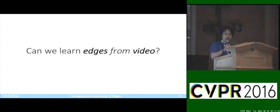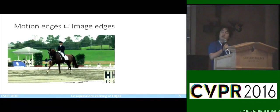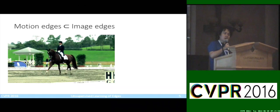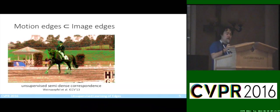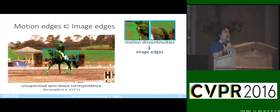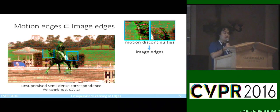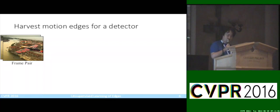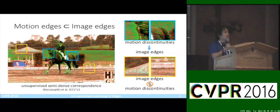Our brief answer is yes, we can do that. Let's look at a pair of frames within the video. We're going to match local regions and build a semi-dense motion field. If you look at the blue regions, these are regions where the motion is not smooth — motion edges happen when the motion field is discontinuous. These motion edges are actual boundaries of the horse. However, if we look at the yellow region, these are actual image edges but the motion is smooth. So in brief, motion edges are only a subset of image edges.